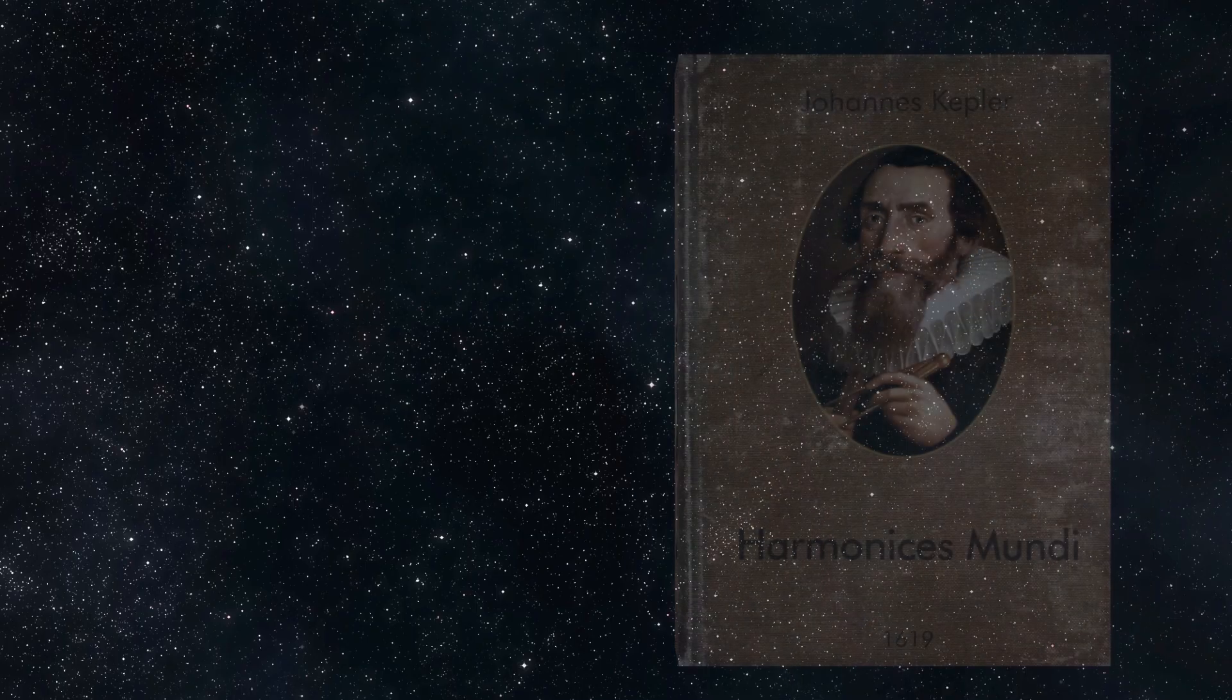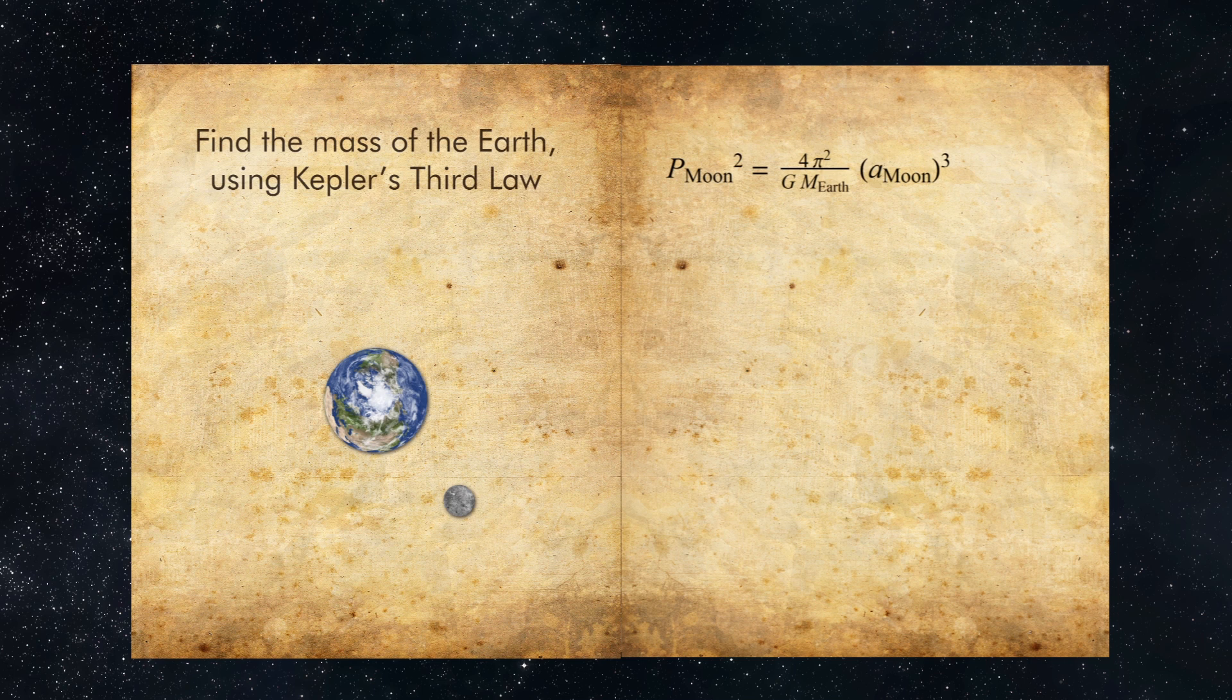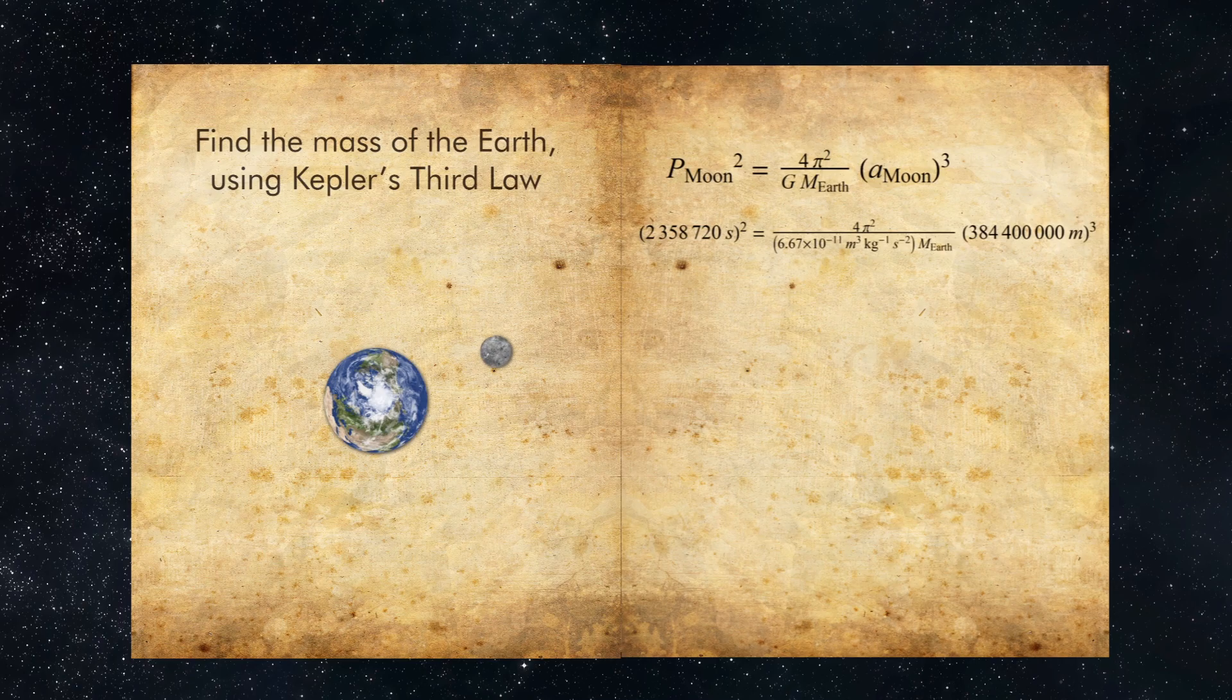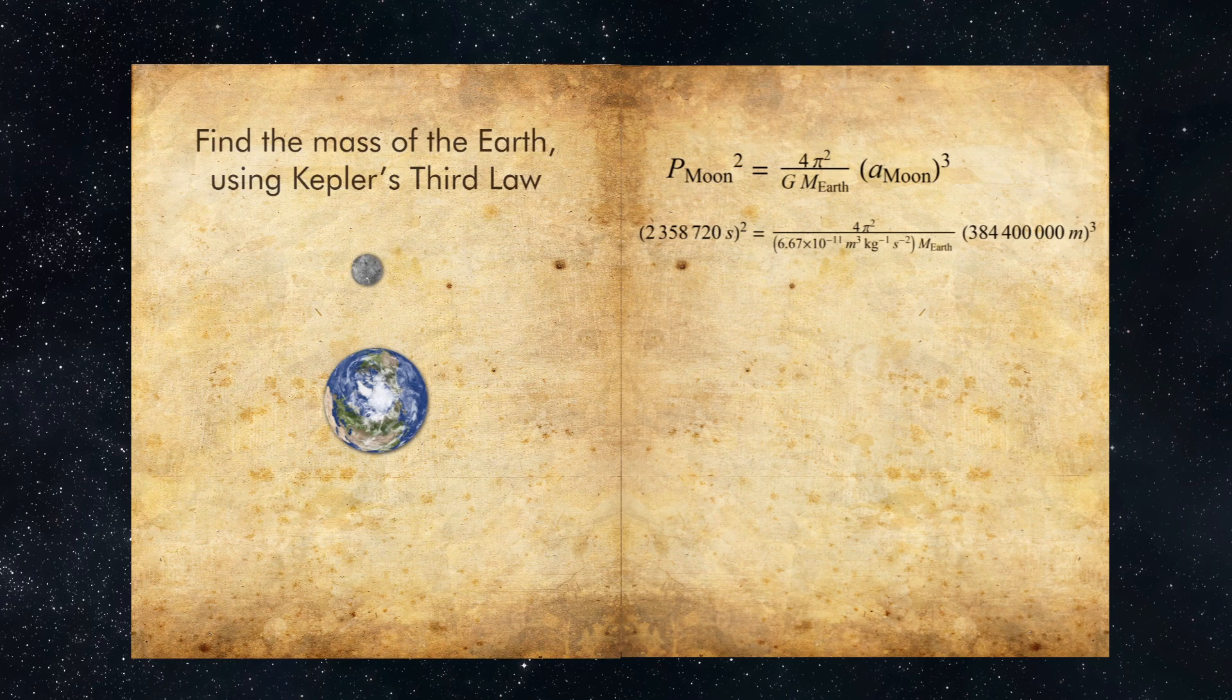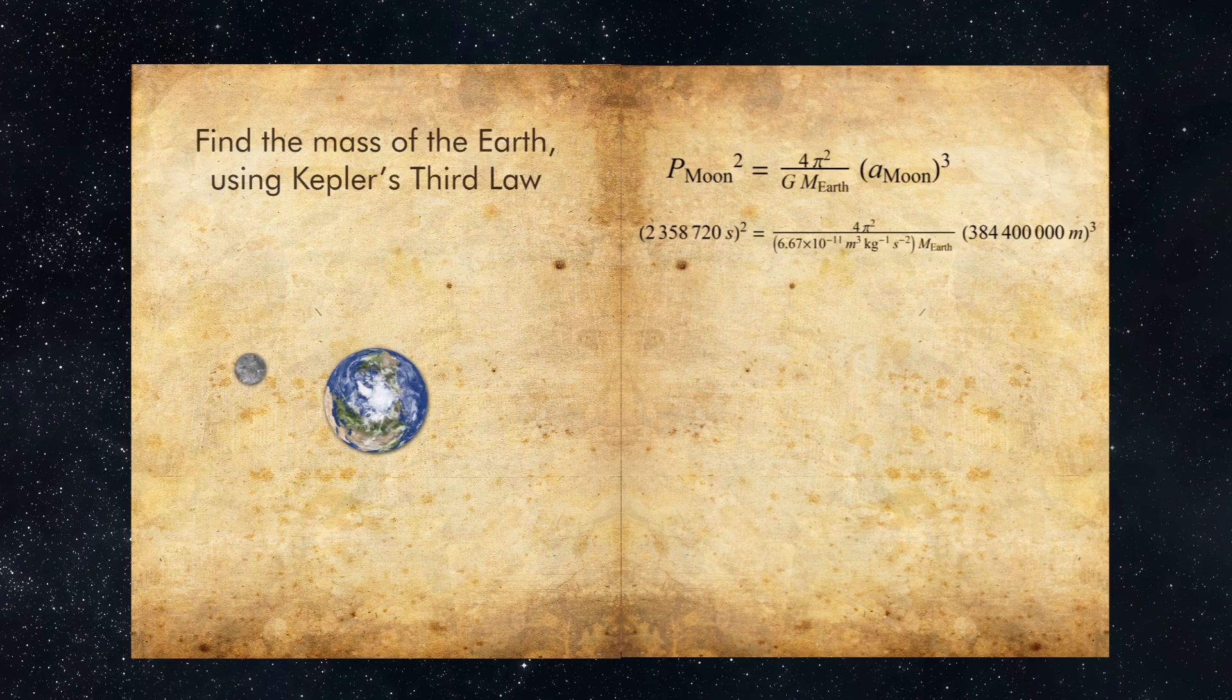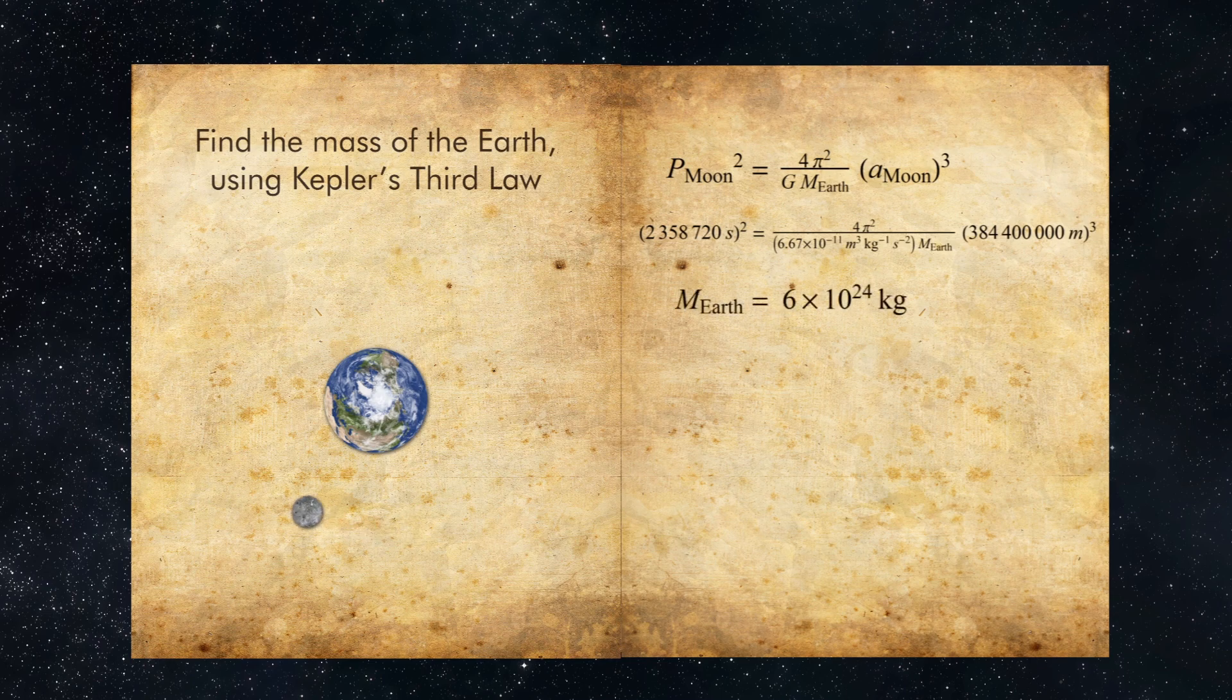You can find the mass of the Earth, for example, by rewriting the equation using the distance and orbital period of the Moon. The Moon's orbital period p_Moon is 27.3 days, or 2,358,720 seconds, and the semi-major axis of the Moon's orbit a_Moon is 384,400,000 meters. G, as usual, is 6.67 × 10⁻¹¹ meters cubed per kilogram per second squared. Solving the equation using these parameters yields an estimate for the mass of the Earth of 6 × 10²⁴ kilograms. Any planet with a Moon can easily be weighed this way, and it's all thanks to Kepler's Third Law.